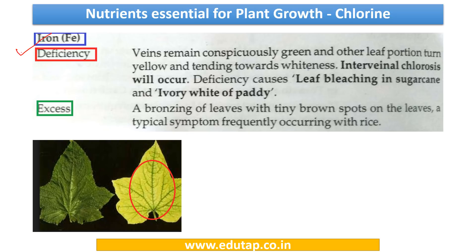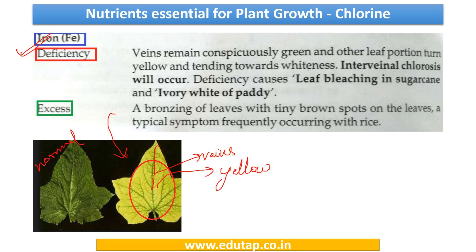We have come to iron. You can see in the picture: this is a normal leaf and this is a leaf with iron deficiency. The veins are green, but the spacing between the veins — the interveinal position — is yellow. This condition is called interveinal chlorosis. Because of iron deficiency, this is observed, and it causes leaf bleaching in sugarcane and ivory white of paddy — very important, kindly memorize this.